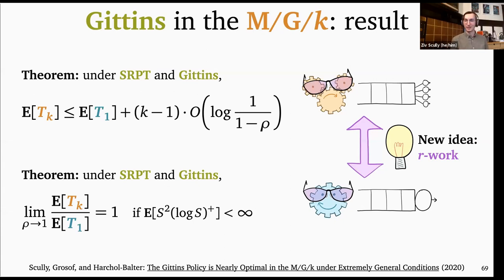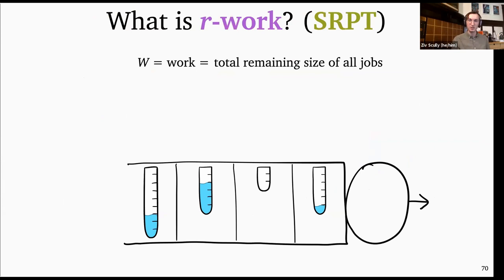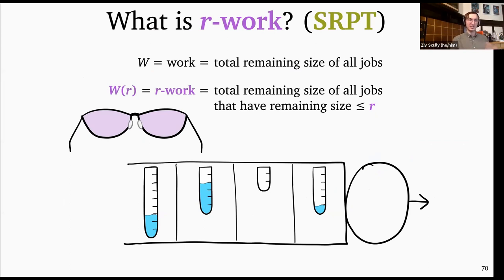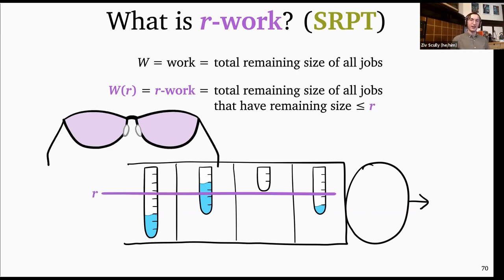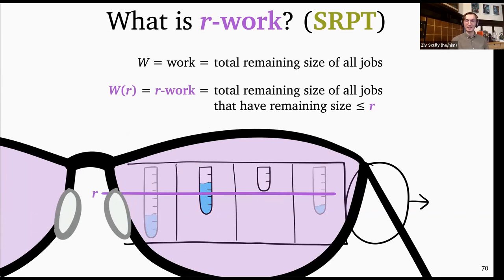Let's get started with proving these results, or at least showing the key ideas. I'm going to start with this concept of R-work. Normal work in a queuing system is just the total remaining size of all jobs currently present. R-work, written as W(R), when we're talking about a system using SRPT, is the total remaining size of all jobs, but only counting the ones that have remaining size below R. I like to picture this as putting on size-R sunglasses that hide anybody whose remaining size isn't below R — the total remaining size of all the jobs I see through the glasses is the R-work in the system.